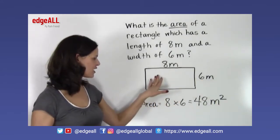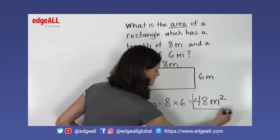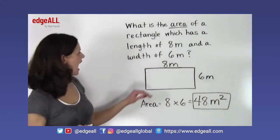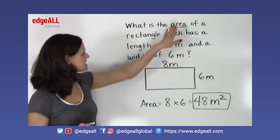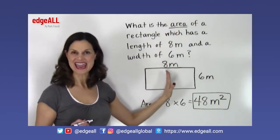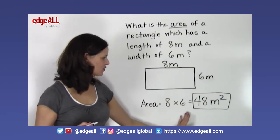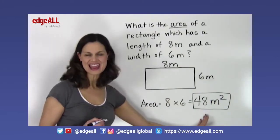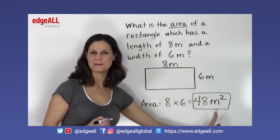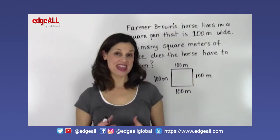So the answer to our problem of finding the area of a rectangle that measures 8 by 6 is that the area equals 48 square meters, or 48 meters squared.